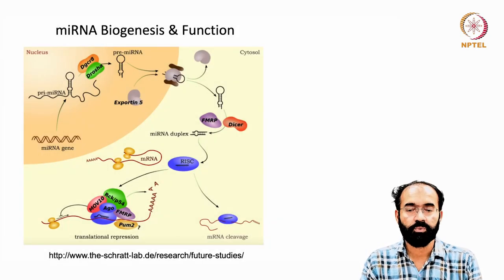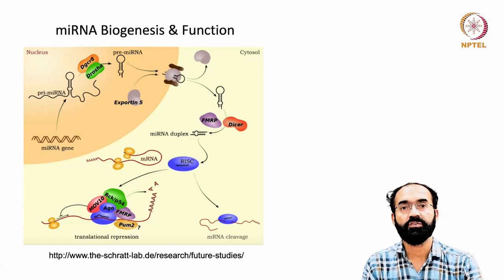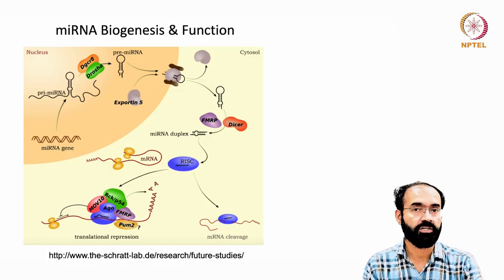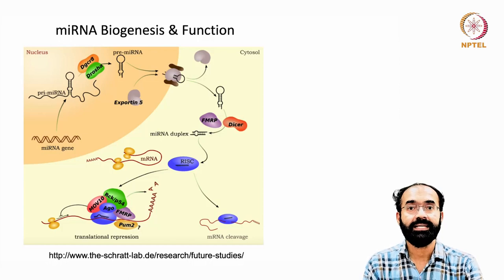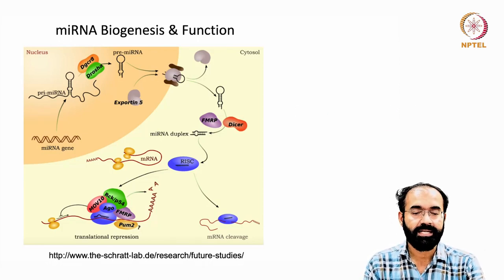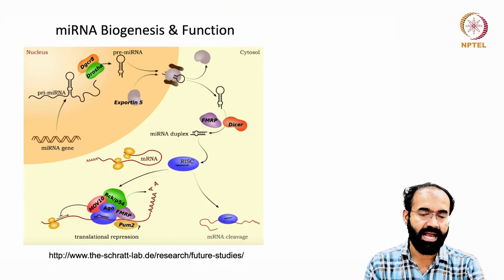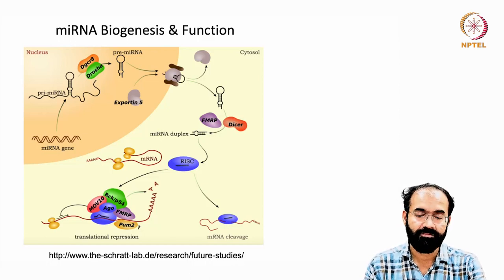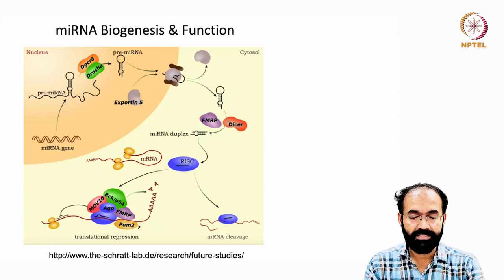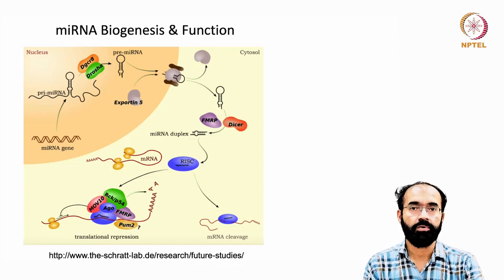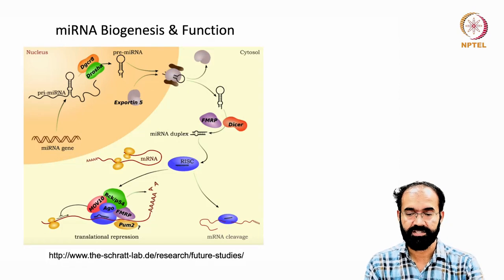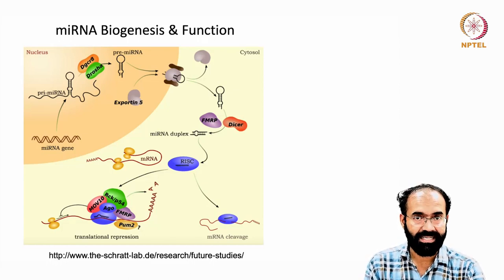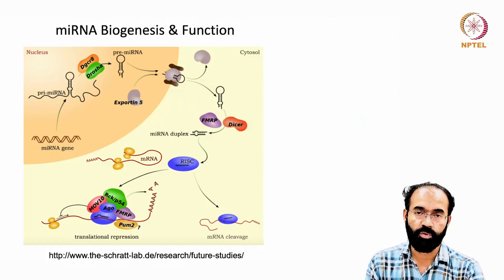Welcome back to another session of RNA biology. In the previous class we covered microRNA biogenesis and function. MicroRNA has two major phases: production in the nucleus as primary microRNA, matured through pre-microRNA by the action of Drosha and DGCR8, then exported to the cytoplasm where it is acted upon by Dicer and FMRP to prevent translatability or affect the stability of mRNA. In simple terms, microRNAs prevent the formation of protein from an mRNA.